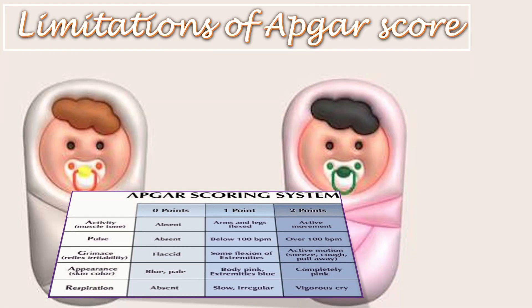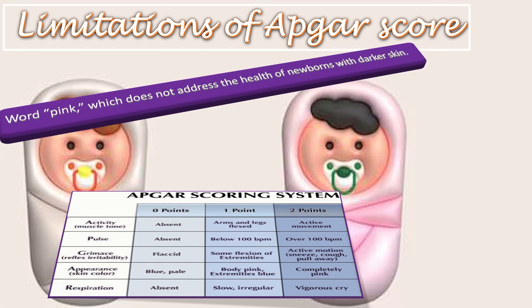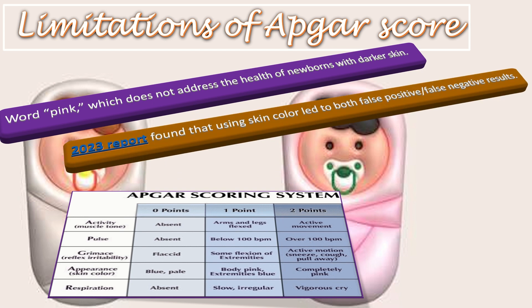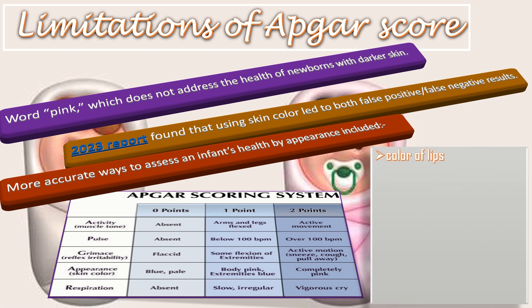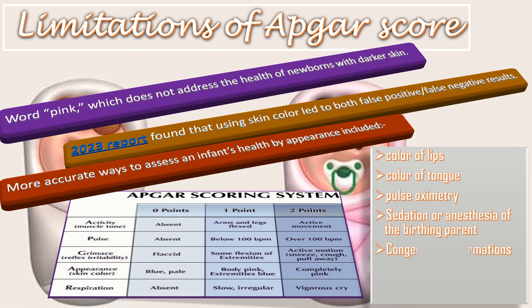What are the limitations of APGAR score? One limitation is the use of the word 'pink,' which doesn't address the health of newborns with darker skin. A 2023 report found that using skin color led to both false positive and false negative results. More accurate ways to assess an infant's health by appearance include the color of the lips, color of the tongue, pulse oximetry, sedation or anesthesia of the birthing parent, congenital malformations, gestational age, and trauma.